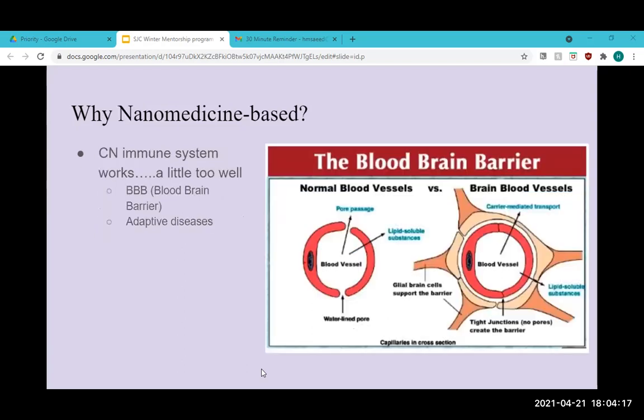So why exactly would we even need to incorporate nanomedicine into immunotherapy treatments? Isn't that enough? Well, there are some problems with current immunotherapy treatments that are hard to figure out. One of the biggest ones is the fact that our central nervous immune system works, but it works a little too well. The environment of our central nervous system is very adaptive and distinct through the existence of different things like glial cells.